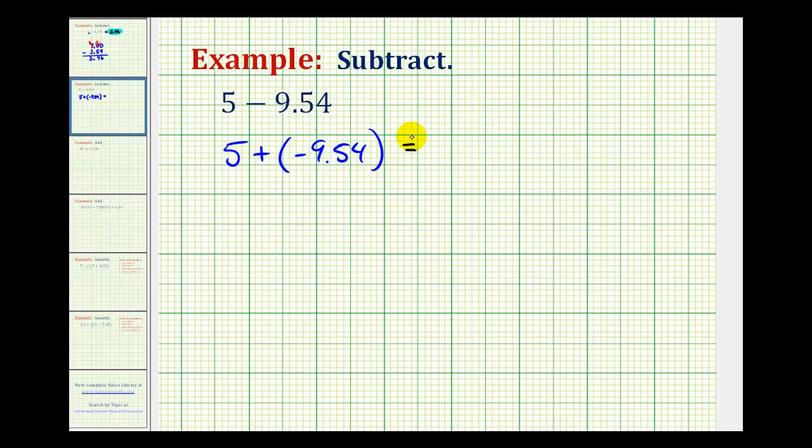And when adding numbers with different signs, the rule is to subtract the absolute values. We always subtract the smaller absolute value from the larger absolute value, and then we use the sign of the number with the larger absolute value.